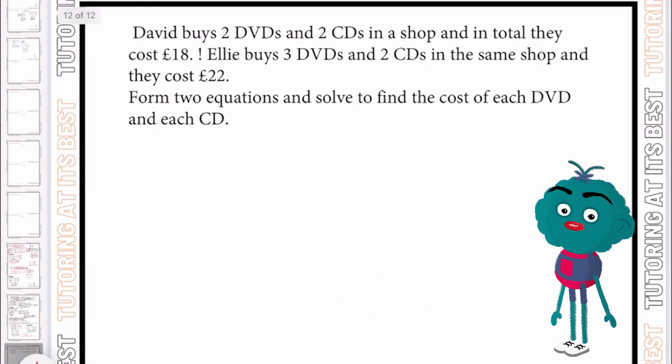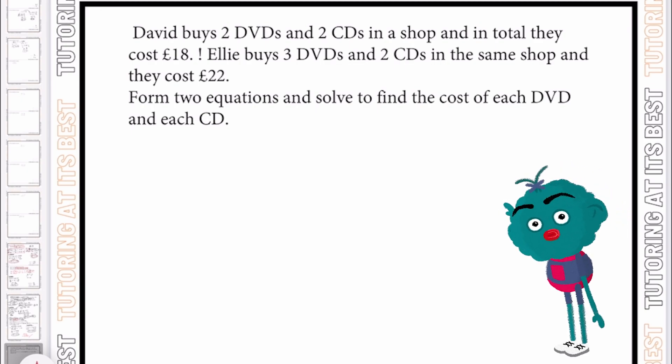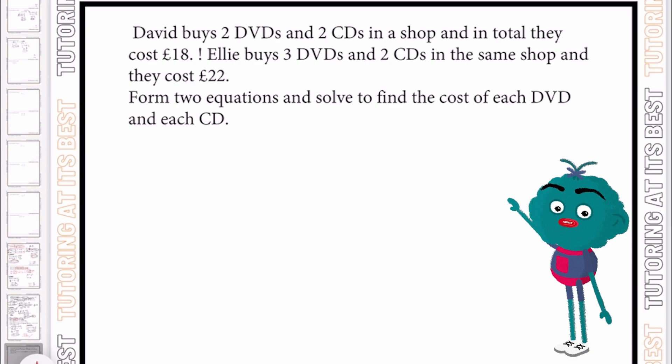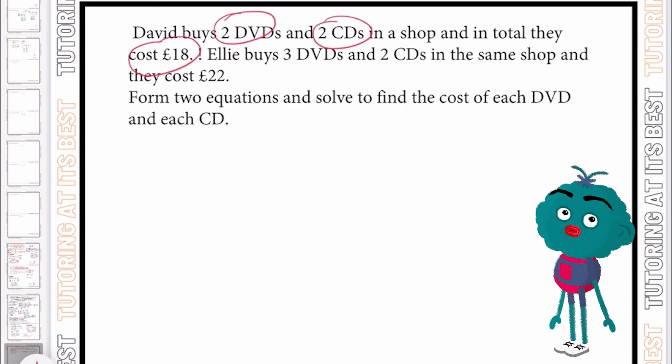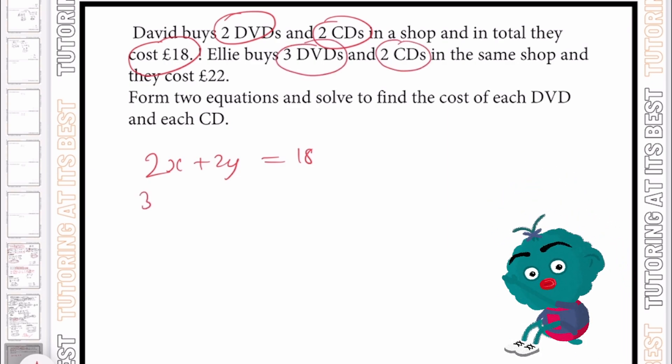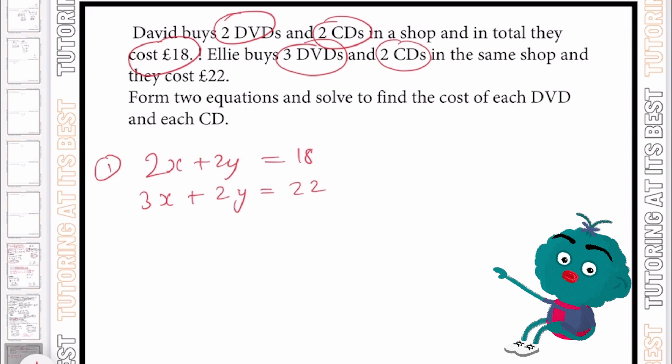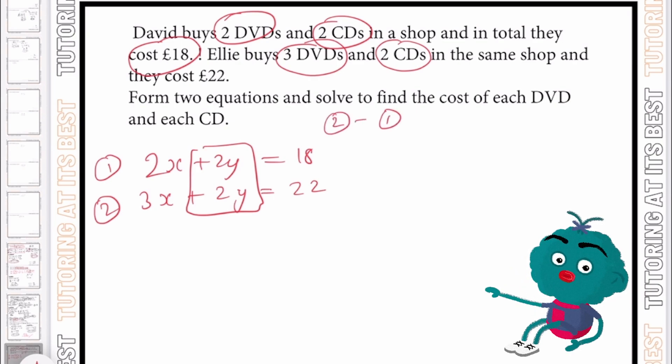Let's move into our final question here. David buys two DVDs and two CDs. And in total, they cost £18. So let's write out our first section. We've got two DVDs, two CDs, that cost £18. So let's go for 2x plus 2y equals 18. Ellie then buys three DVDs and two CDs. So we can have three DVDs plus two CDs, which equal £22. Again, we can label this as equation one and equation two. And now you can see our coefficient for y is the same. So again, I can simply have my equation two take away my equation one. So that leaves us with x, which equals four.